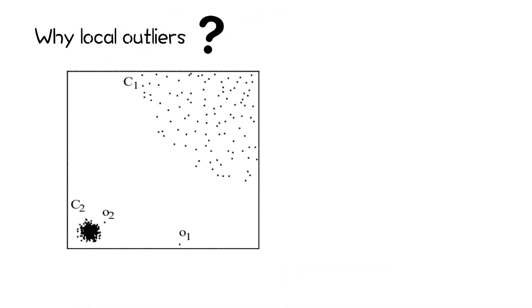Why do we care about local outliers? Global outliers are far away from all the other points in the dataset, but local outliers are only far away from nearby points in one area. Similar points will be considered as inliers in other parts of the dataset.